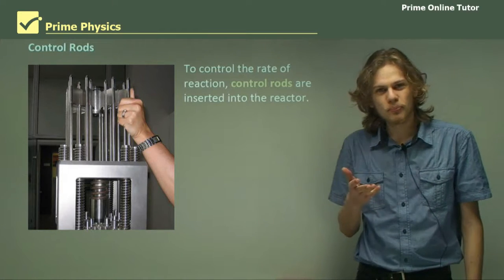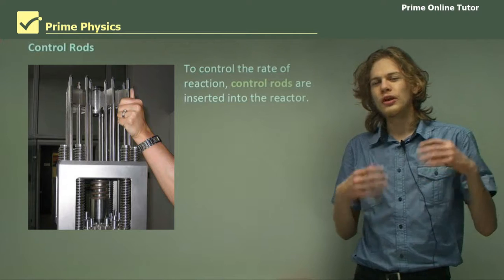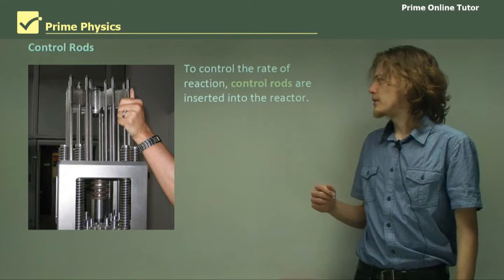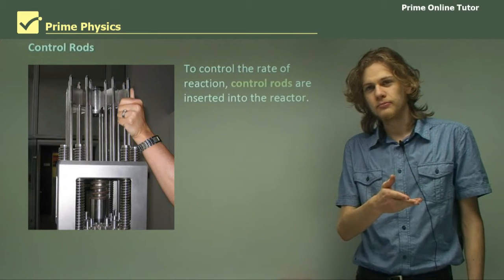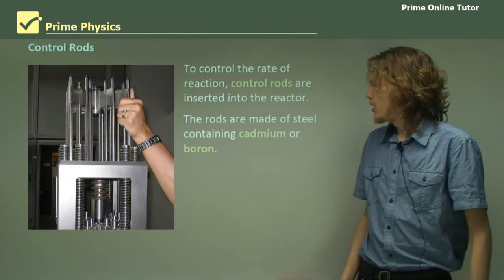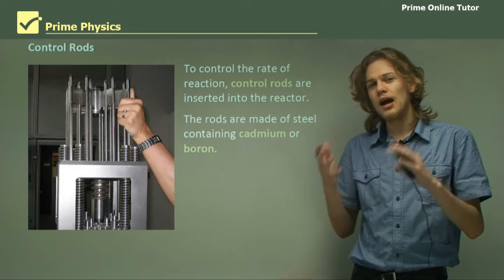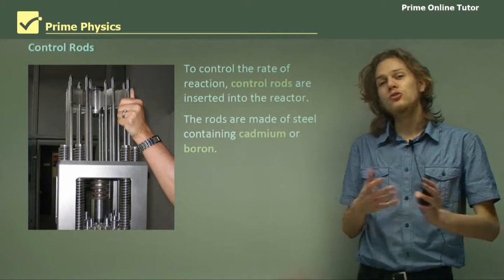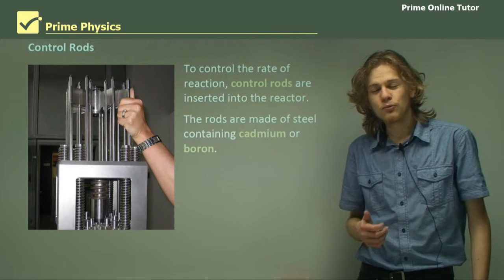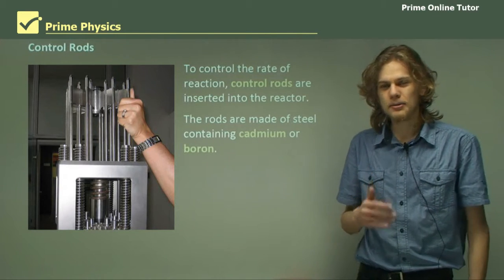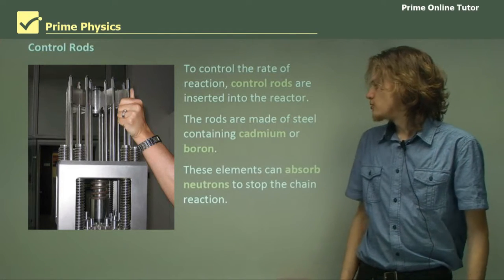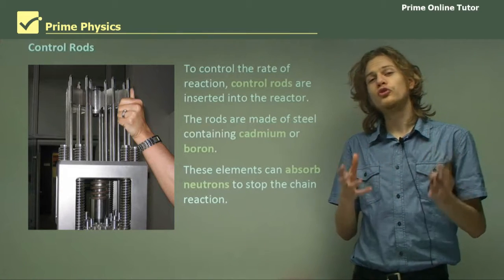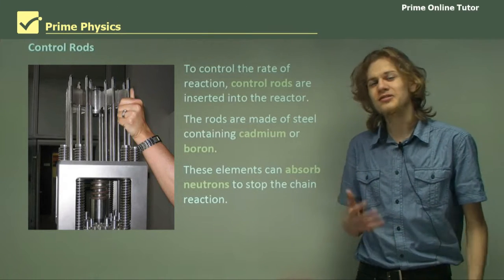We'll talk about control rods. You will remember that there were control rods in Chicago Pile-1. To control the rate of reaction, we stick control rods into the reactor. They contain cadmium or boron, which are fairly good at absorbing neutrons. If we can absorb neutrons, then we can stop a chain reaction. These elements are able to control the rate of reaction, hence the name control rods.